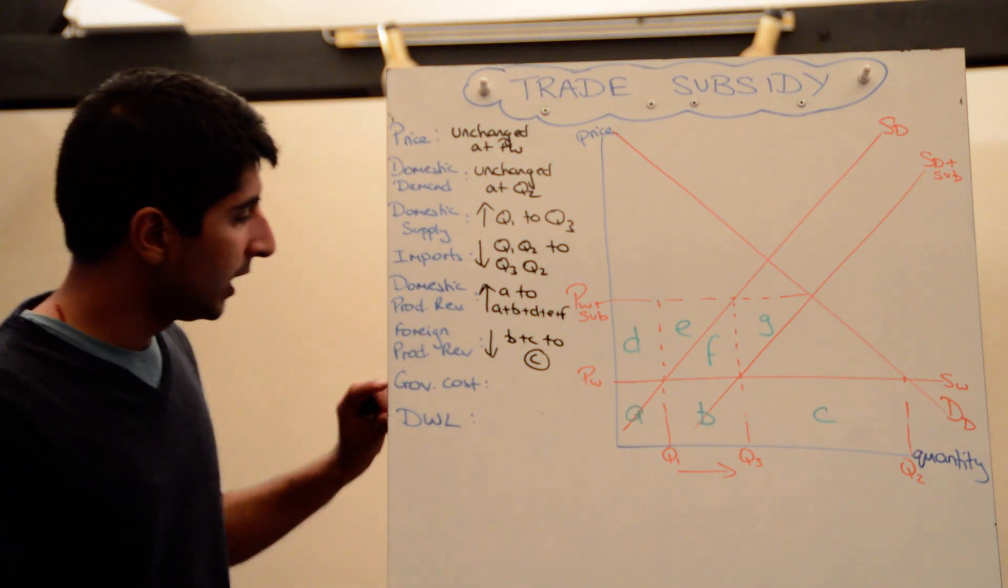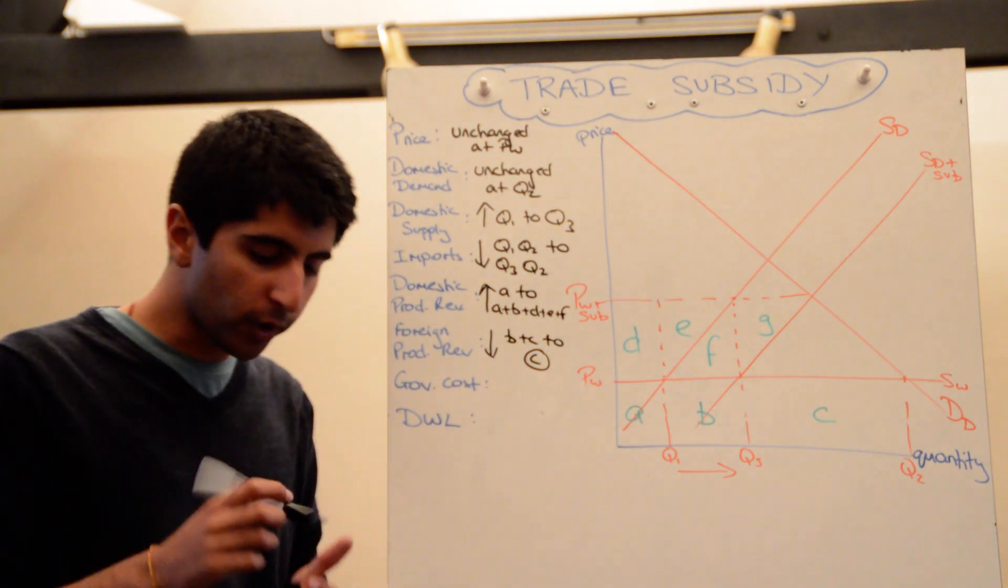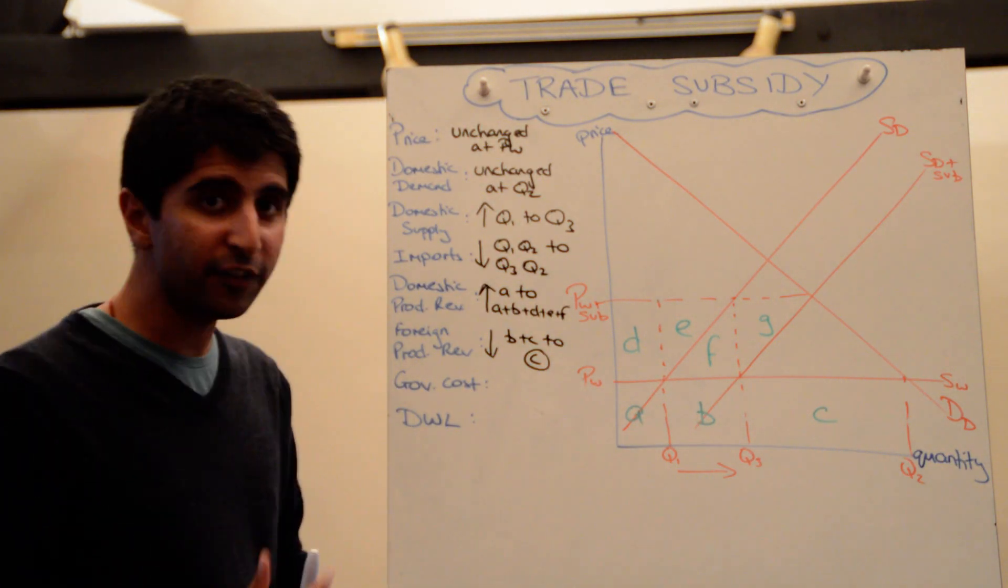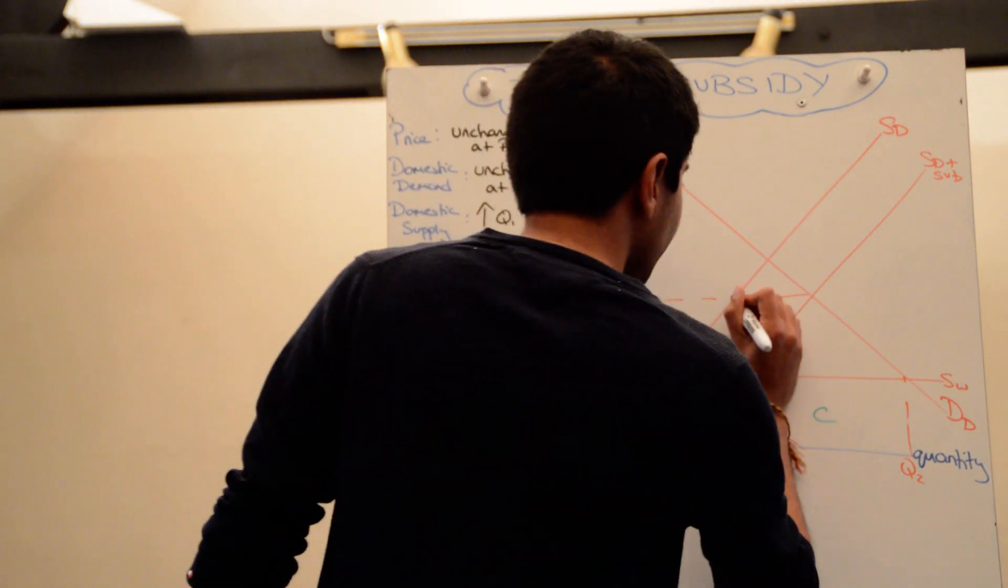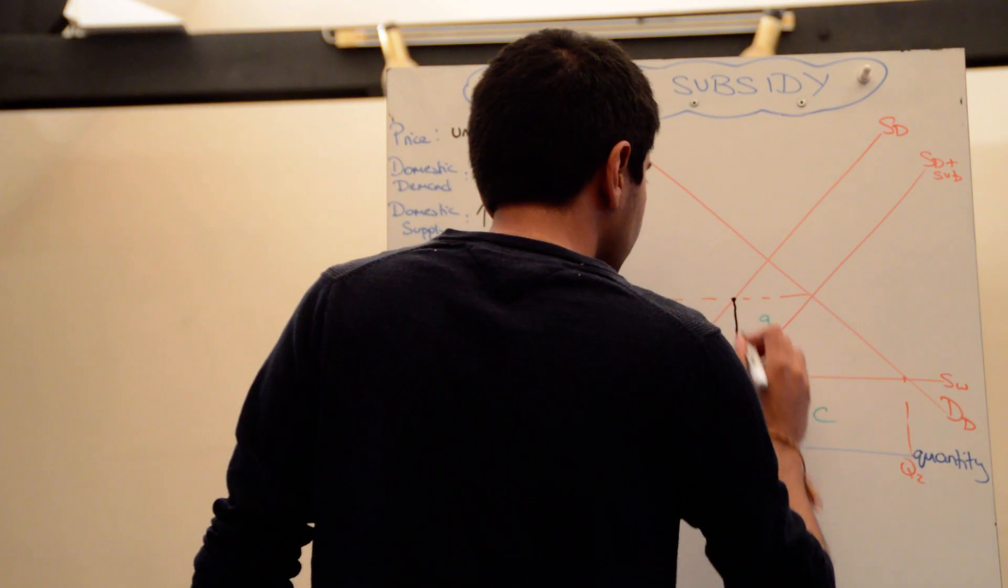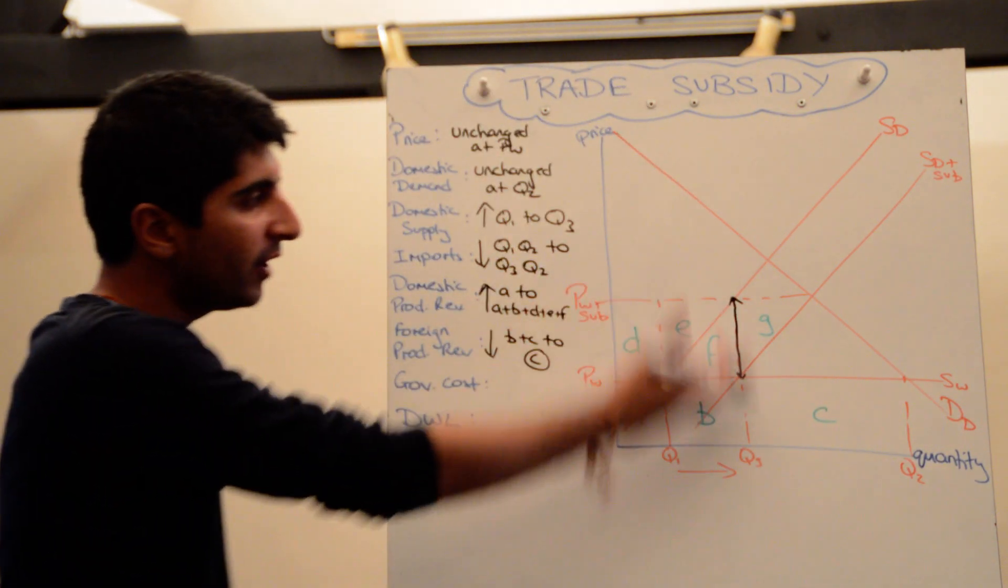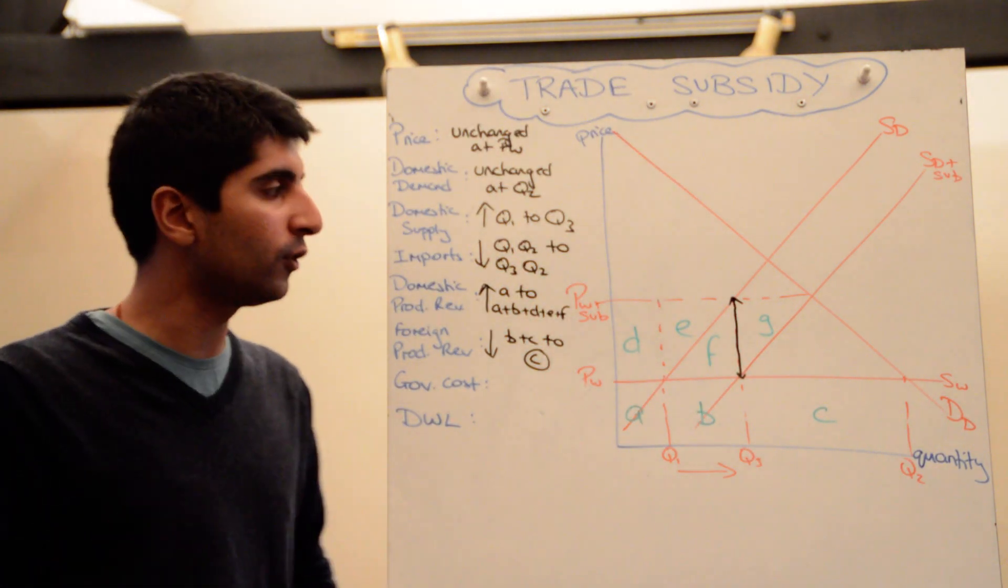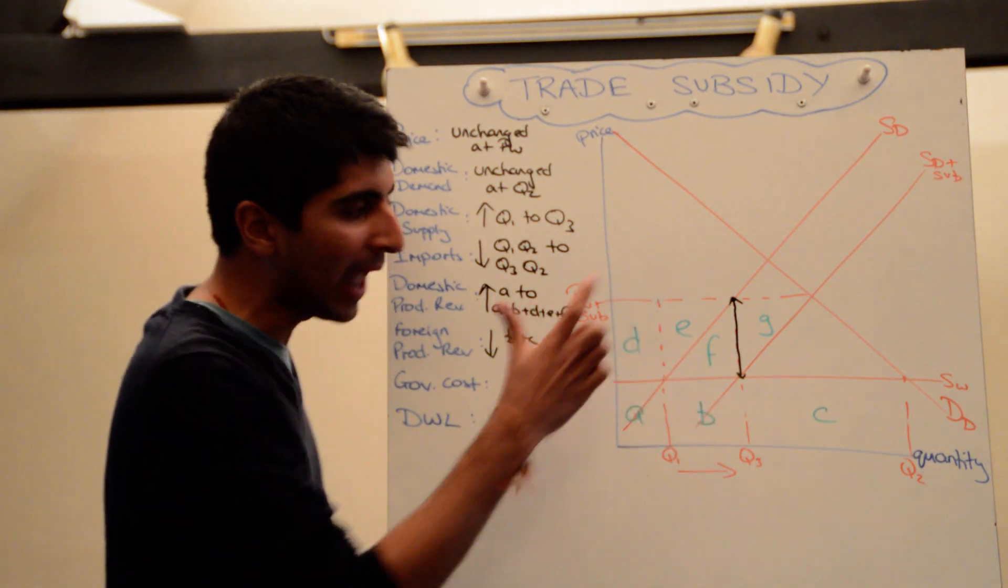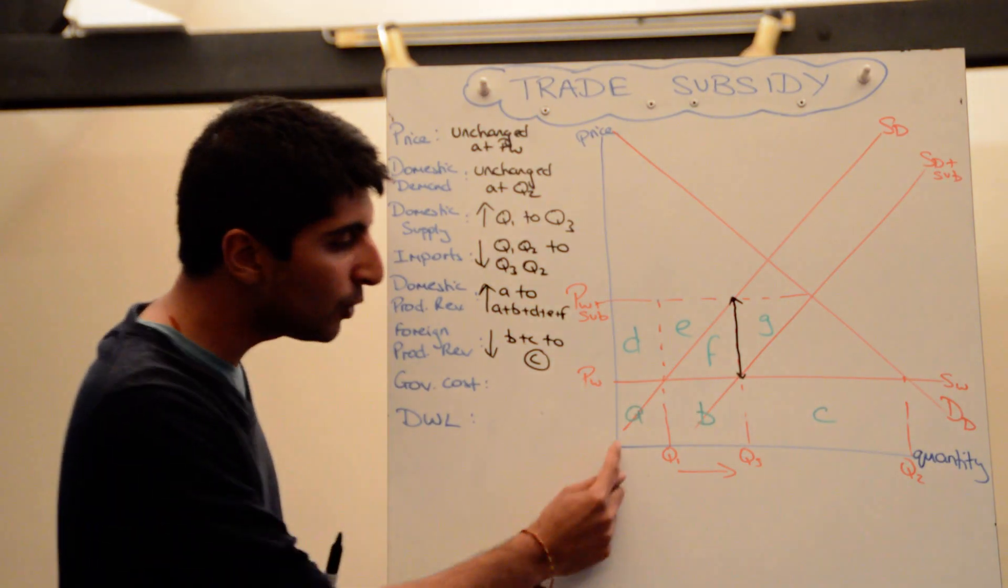There is a cost to the government. How do we work out how much it costs the government? Well, the value of the subsidy is important to work out. The difference between the two supply curves is the value of the subsidy, so this black line there, that vertical distance, the difference between the two supply curves is the value of the subsidy, and that's being given on every unit produced by domestic suppliers, so every unit up to q3.